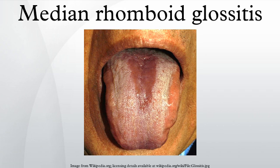Median rhomboid glossitis is a condition characterized by an area of redness and loss of lingual papillae, situated on the dorsum of the tongue in the midline immediately in front of the circumvallate papillae. It is thought to be created by a chronic fungal infection and usually is a type of oral candidiasis. The lesion is located immediately anterior to the foramen cecum and circumvallate papillae in the midline on the dorsum of the tongue.